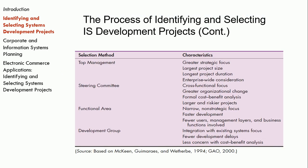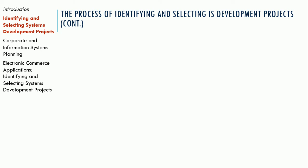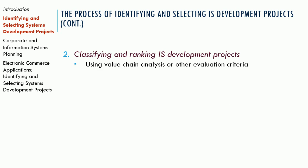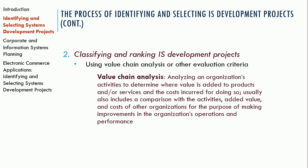The process of identifying and selecting projects could come from top management, a steering committee, functional areas, or development groups that identify ways to do things more efficiently. So there are multiple ways to identify these projects. Second, we're going to classify and rank our projects. We'll use a value chain analysis or other evaluation criteria. A value chain analysis analyzes an organization's activities to determine where value is added to products or services and the costs incurred, usually incorporating a comparison with other organizations for the purpose of making improvements.